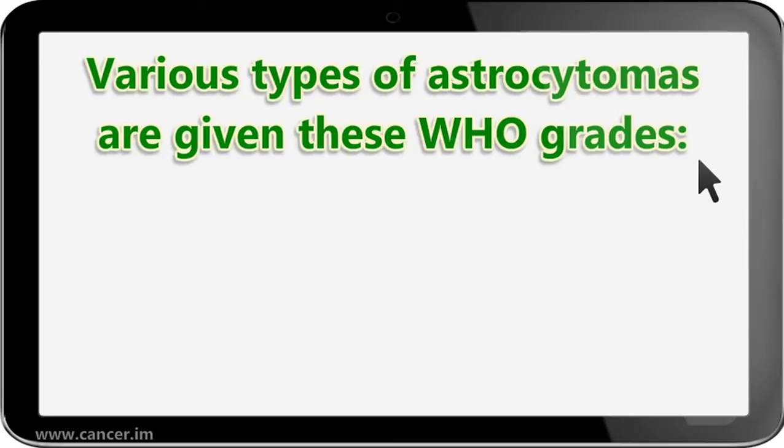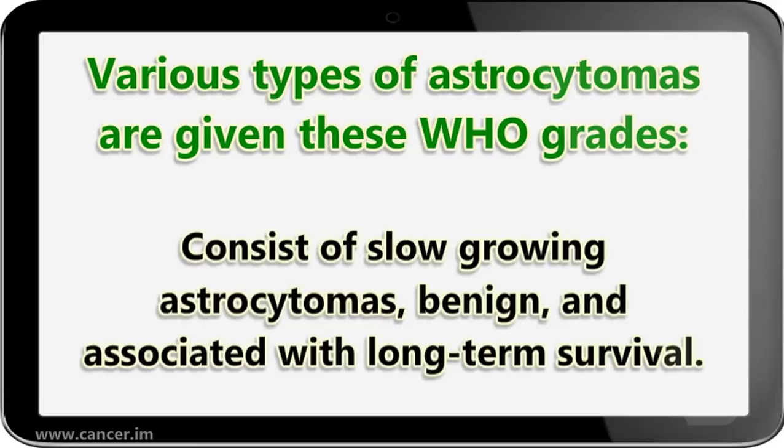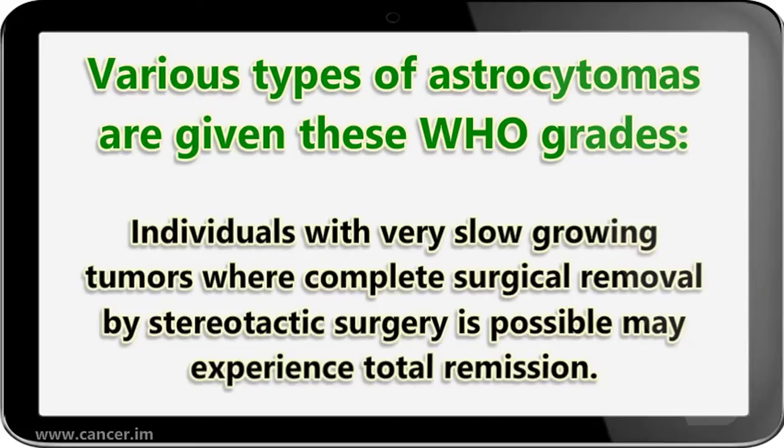Various types of astrocytomas are given these WHO grades. Grade I includes pilocytic astrocytoma, pleomorphic xanthoastrocytoma, subependymal giant cell astrocytoma, and subependymoma. These consist of slow-growing astrocytomas that are benign and associated with long-term survival. Individuals with very slow-growing tumors where complete surgical removal by stereotactic surgery is possible may experience total remission.